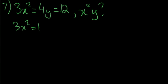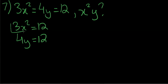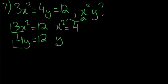To figure this out, we can separate this entire equality into two separate equalities: 3x squared equals 12 and 4y equals 12. If we simplify this, divide each side by 3, we get x squared is equal to 4. So we found our x squared value over here.